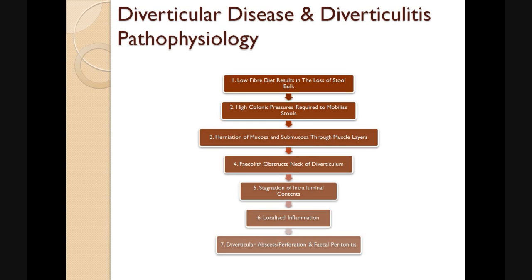What is the pathophysiology of diverticular disease and diverticulitis? Firstly, a low-fibre diet results in the loss of stool bulk. You therefore get a high colonic pressure, which is required to mobilise such stools. The high colonic pressures cause the herniation of the mucosa and the submucosa through the muscular layers of the colonic wall.